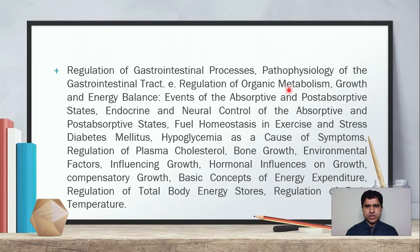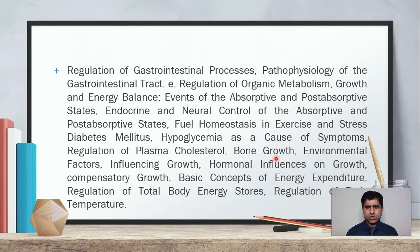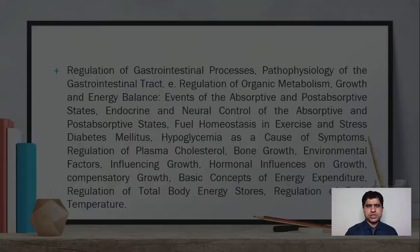Subheading E is regulation of organic metabolism, growth, and energy balance, covering events of absorptive and post-absorptive states, endocrine and neural control of absorptive and post-absorptive states, fuel homeostasis in exercise and stress, diabetes mellitus, hyperglycemia as the cause of symptoms, regulation of plasma cholesterol, bone growth, environmental and hormonal influences on growth, compensatory growth, basic concepts of energy expenditure, regulation of total body energy stores, and regulation of temperature.